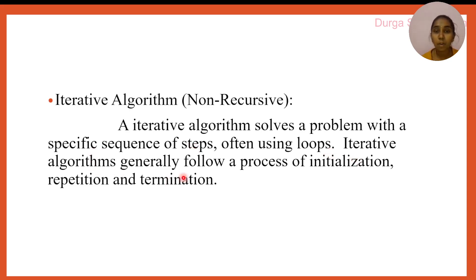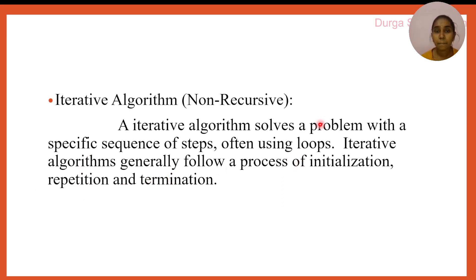Iterative algorithms generally follow a process of initialization, repetition, and termination. Initialization means storing a value into a variable. Repetition involves a condition — if the condition is true, statements are executed; if false, they are not. Statements are repeatedly executed until the condition becomes false. If the algorithm uses a while loop, do-while loop, or for loop, we call it an iterative algorithm.